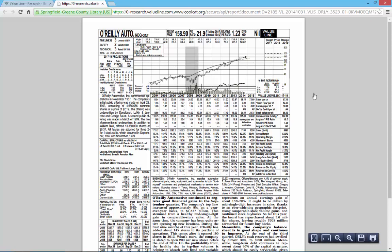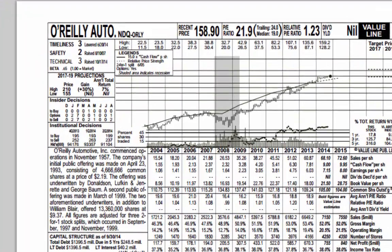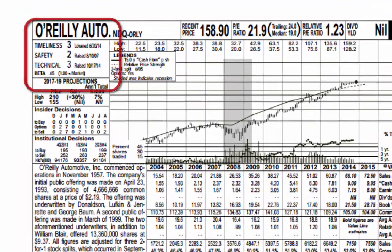There is a lot of information packed into each stock report. Let's briefly go over a few of the commonly used features. First, we find the timeliness, safety, and technical ranks in the upper left-hand corner. These ranks allow stock researchers to quickly gauge a stock's expected price performance and level of risk.